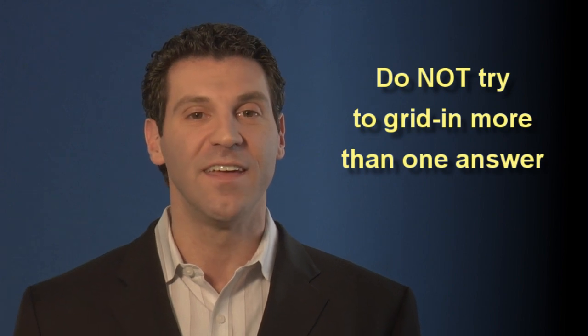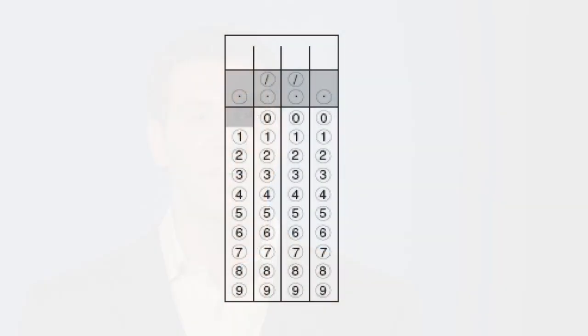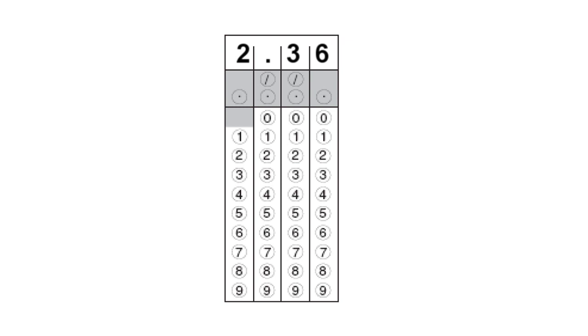Sometimes there is more than one correct answer to a gridding question — simply choose one of them to grid in. You should never try to fit more than one answer into the grid. If your answer is a whole number such as 2,451, or a decimal that only requires 4 or fewer slots such as 2.36, then simply enter the number starting at any column. Note that there is no 0 in column 1, so if your answer is 0, it must be gridded into column 2, 3, or 4.